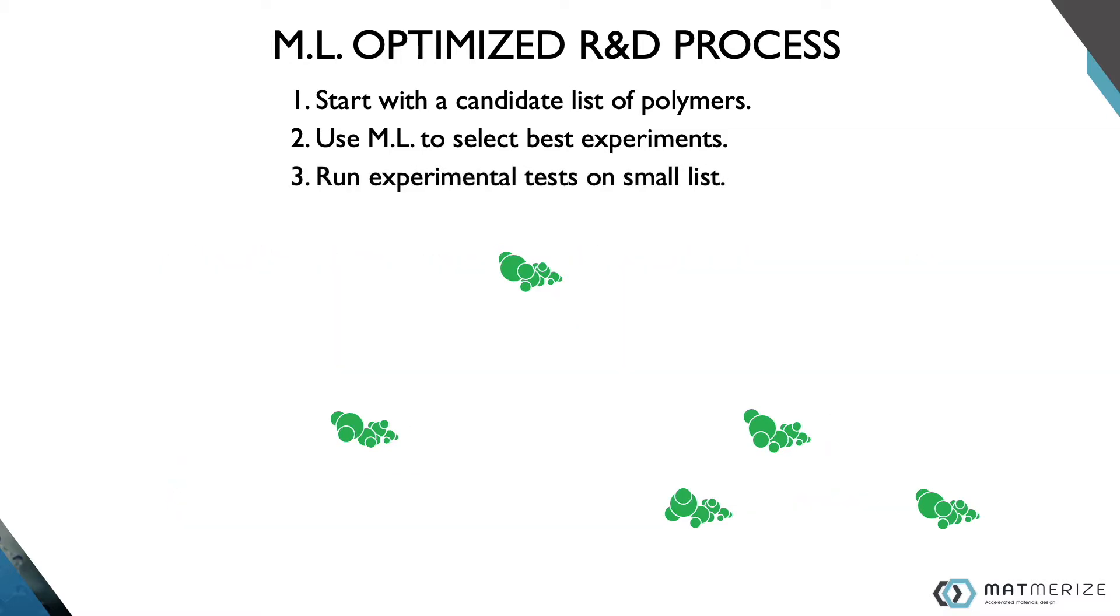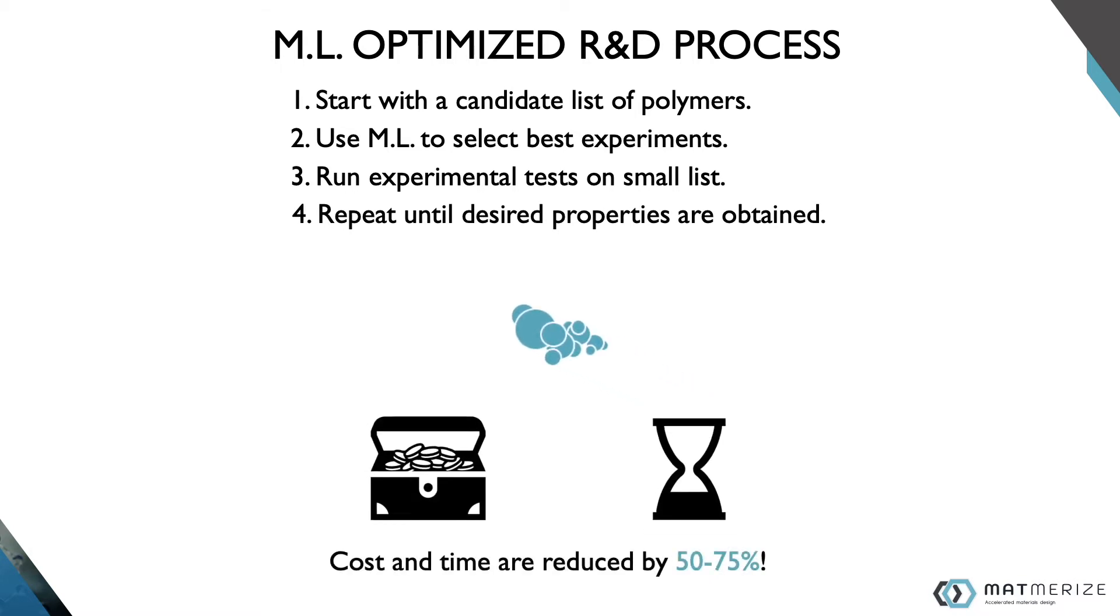Using machine learning, it becomes much easier to find a material with the desired properties. We've found that by using machine learning, you can cut down on your cost and time by 50% to 75%.